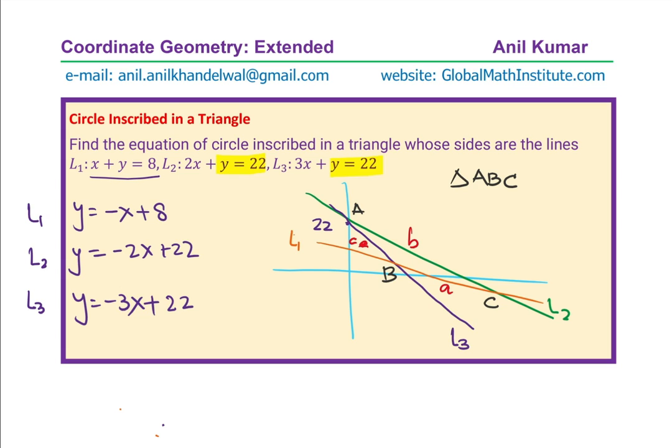Once we have the triangle A, B, C, we can find the side lengths, lower case a, side opposite to vertex A, B and C. So, we can now find what is A, B and C, the side lengths. Now, once we have the vertices and the side lengths, we need to find the center, so that we could have a circle inscribed. So, let us say these points are h,k, the center points.